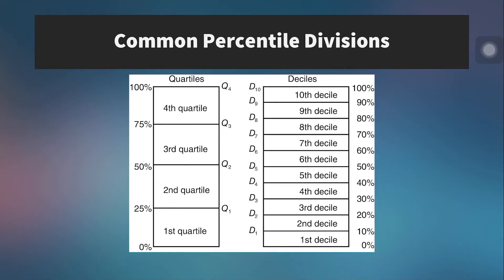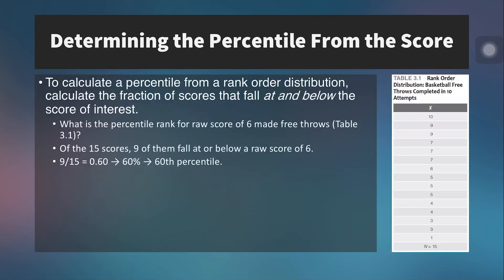Here are some common percentile divisions. We can use the term quartile to refer to 25% increments — the first quartile is the lowest 25%, then the second, third, and fourth. We can also use deciles for more granularity, divided into 10 equal units: the bottom 10% is the first decile, then 20%, 30%, and so on.